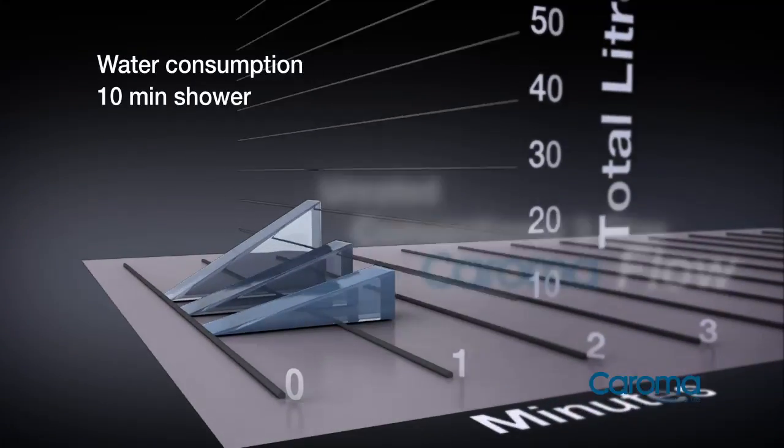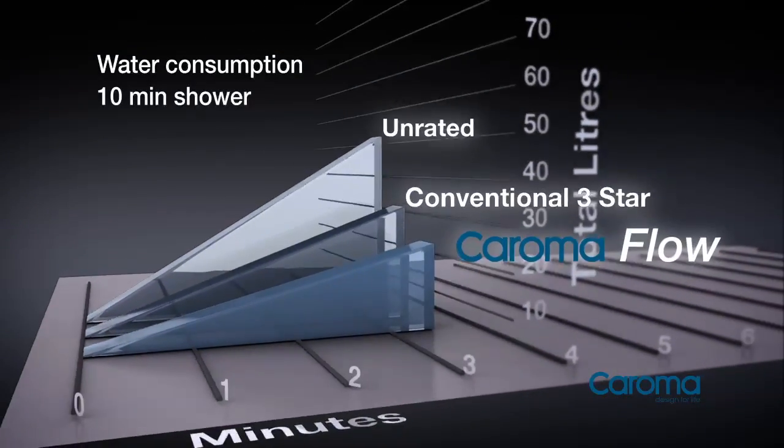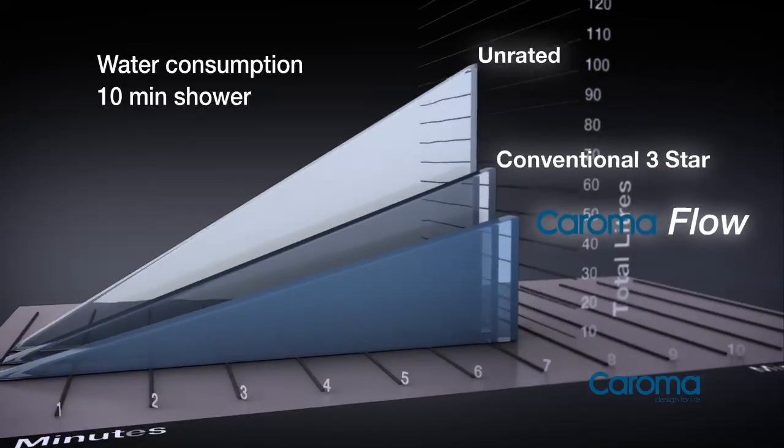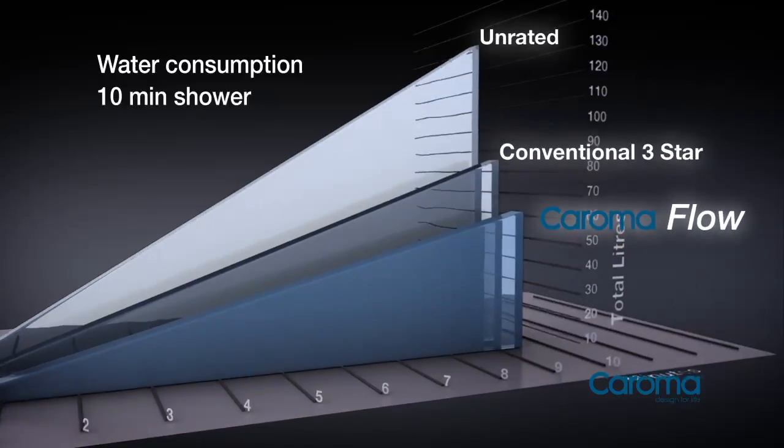By using less water, Coroma Flow helps Australian homes to save on water and energy bills and helps the supply of hot water last longer.